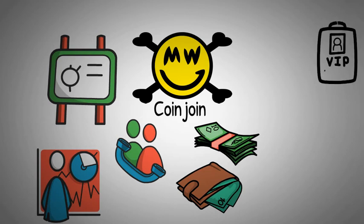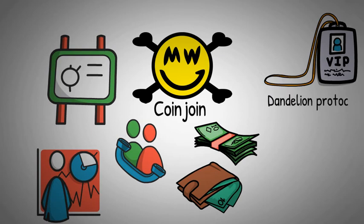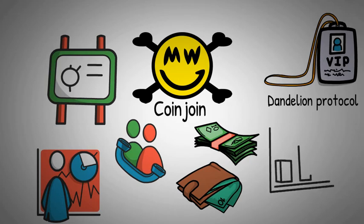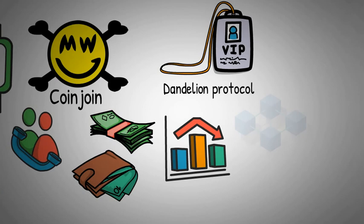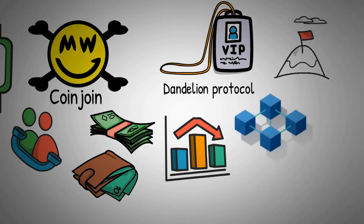MimbleWimble boasts its anonymity feature, which is without a doubt its most important part. This feature is possible because of the Dandelion Protocol that MimbleWimble uses. The Dandelion Protocol aims at reducing the probability and the risk of detecting the origin of a certain transaction on a blockchain. In order to successfully achieve this, the Dandelion Protocol has two phases for its privacy process.